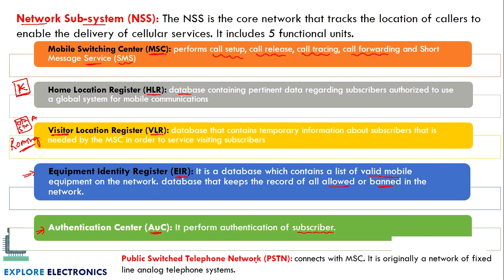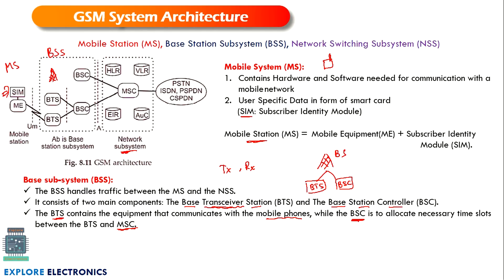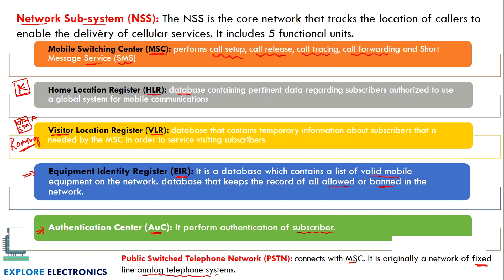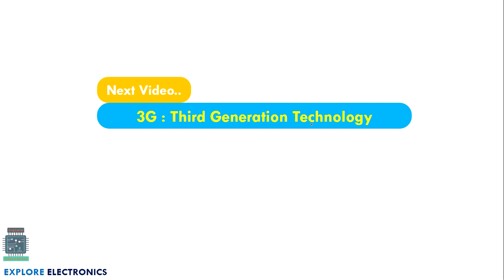The architecture also includes PSTN, which connects to the MSC and is helpful when connecting to the analog or fixed telephone system. In summary, the architecture flows from mobile station with SIM → BTS → BSC → MSC, which operates with HLR, VLR, EIR, and AUC, and is also connected to PSTN, ISDN, PSPDN, and CSPDN. In the next video, we will see third generation (3G) technology. Thank you.